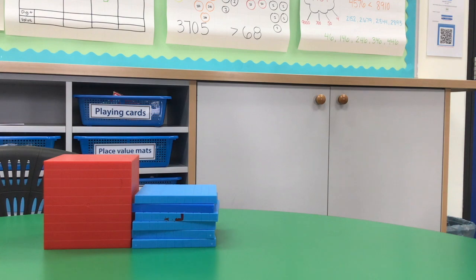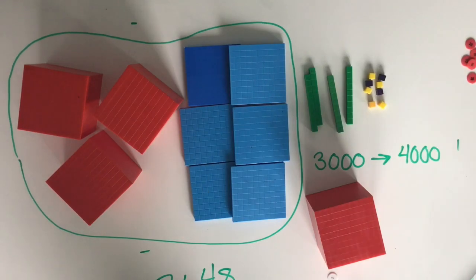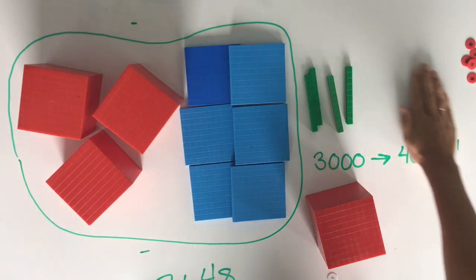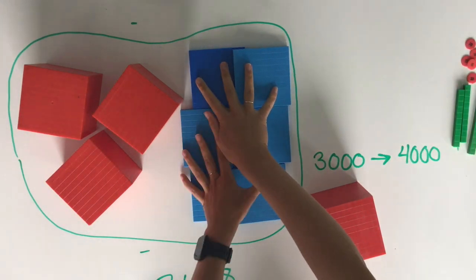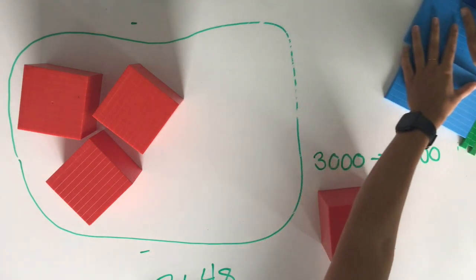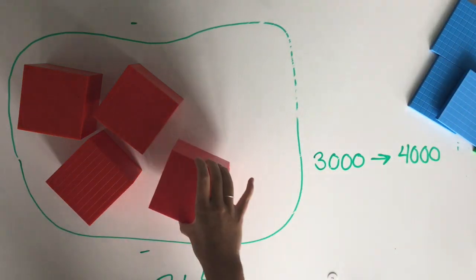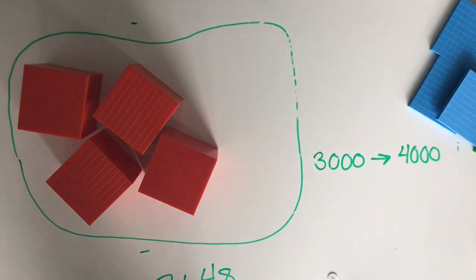Here we have 600, so we will round up. Because we've determined that we're rounding up, we don't need our ones, tens, or our hundreds. 3,648 has rounded up to become 4,000.